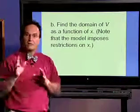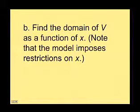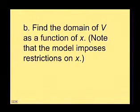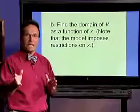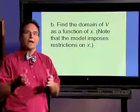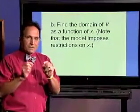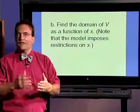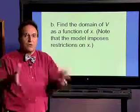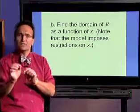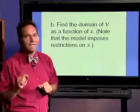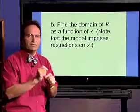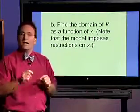Now, let's find the domain of the volume as a function of x. Because the model that we have imposes some restrictions on x. And those restrictions are that all of the measures must be non-negative. In other words, x, the amount that we cut out from each edge, if it were equal to 0, then there would be no volume at all, because we wouldn't be able to fold anything up. So that means that 0 is an end point, but it's not inclusive, because we can't actually have a value of x equaling 0.